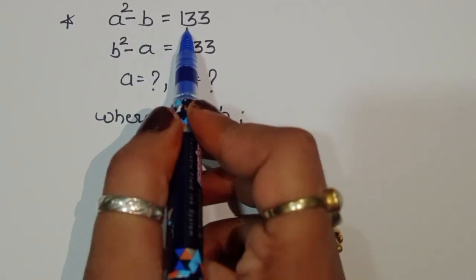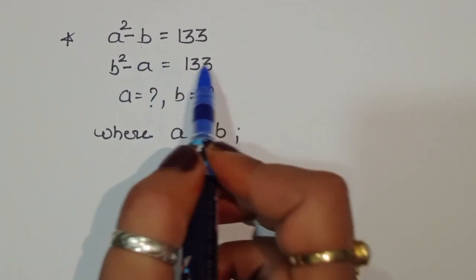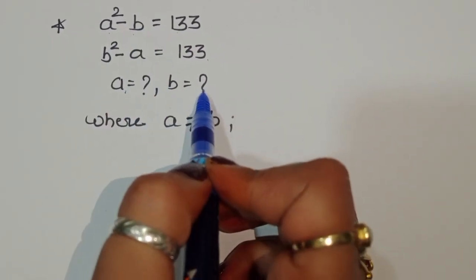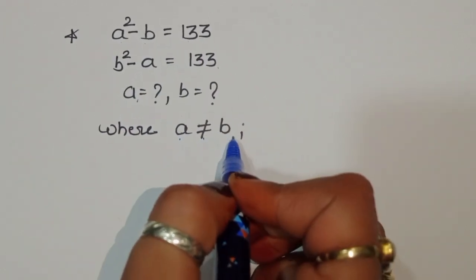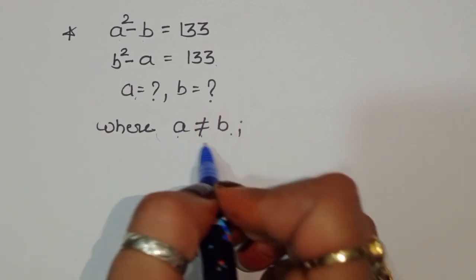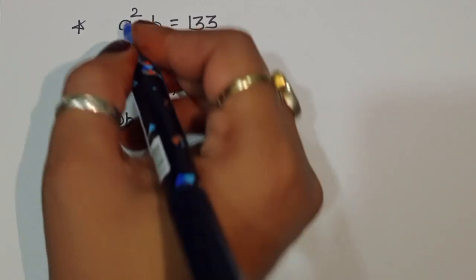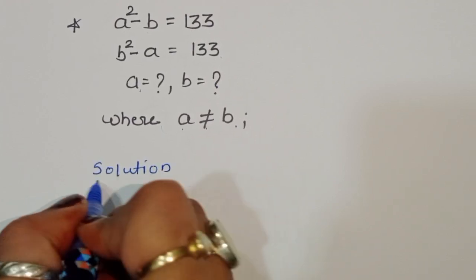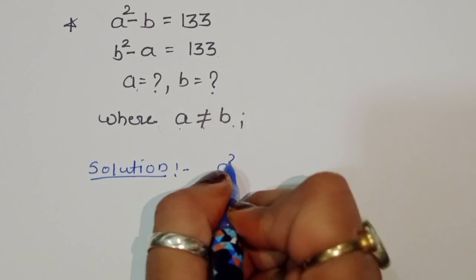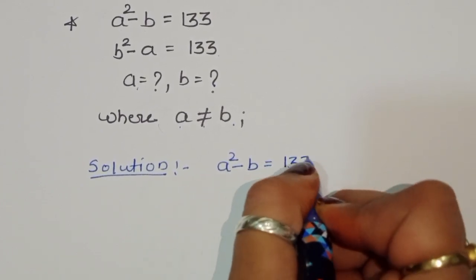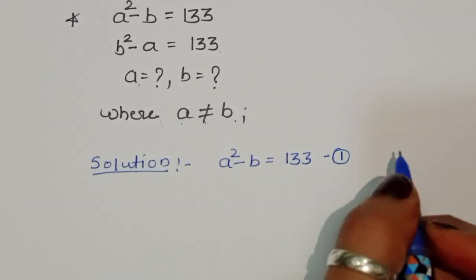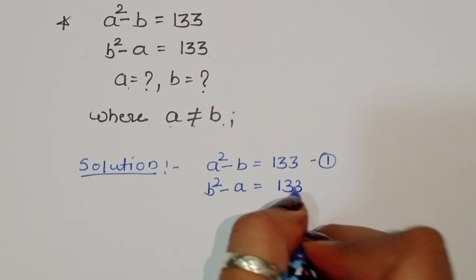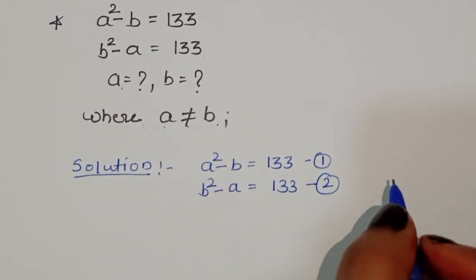The question is: given a² minus b is equal to 133, and b² minus a is equal to 133, we have to find out the value of a and b. One condition is given: a is not equal to b. So we have to follow this condition. Let's see the solution. a² minus b = 133 is equation number 1, and b² minus a = 133 is equation number 2.